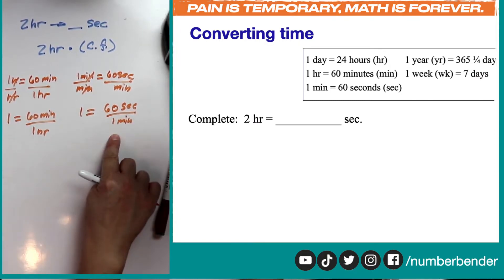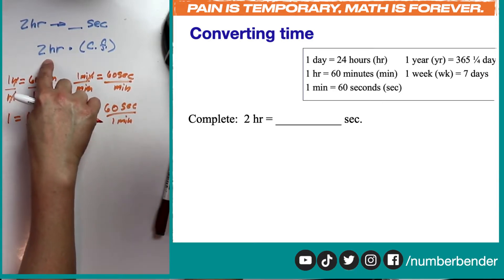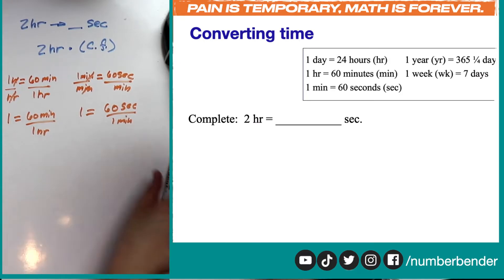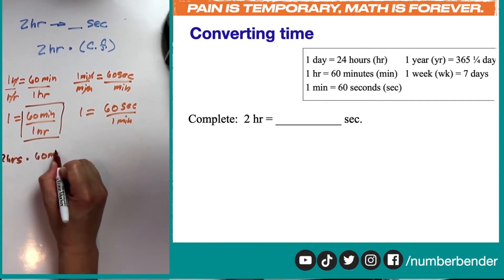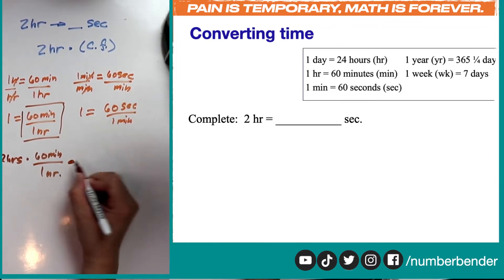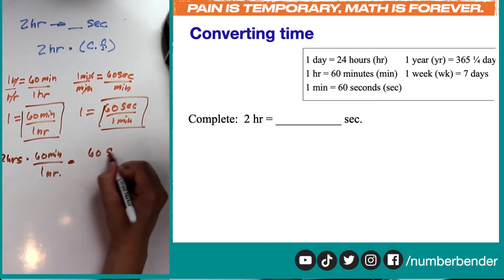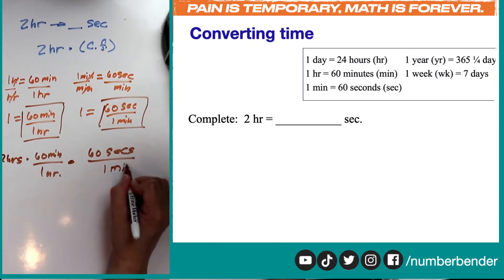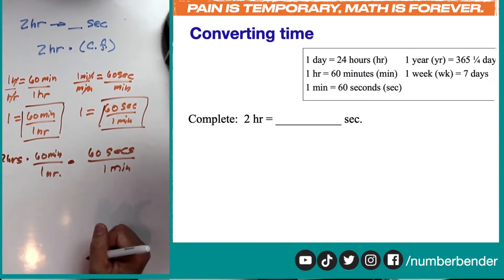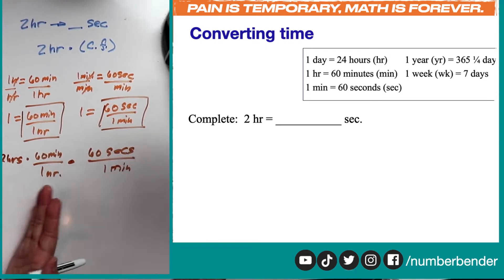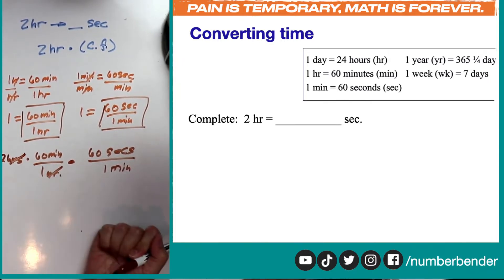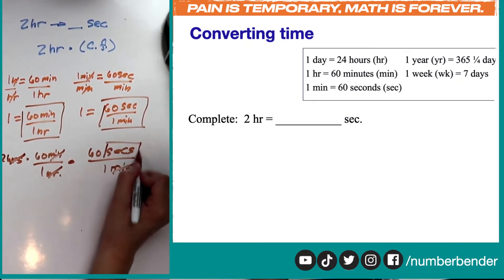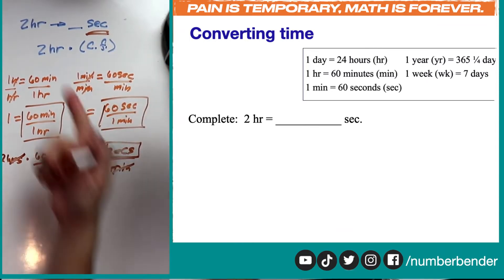We now have two conversion factors to multiply with two hours. Our equation becomes: two hours times 60 minutes over one hour, multiplied by 60 seconds over one minute. Looking at our equation, we can cancel out the hours unit and the minutes unit, leaving us with only seconds — which is what we're trying to convert into. No reciprocation of any conversion factor is needed.